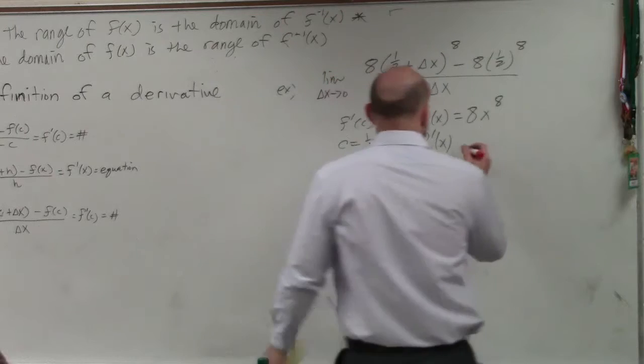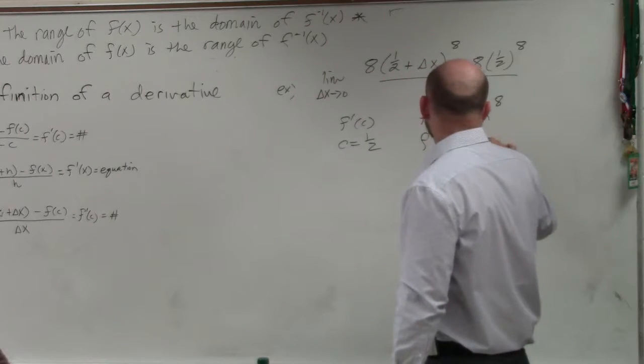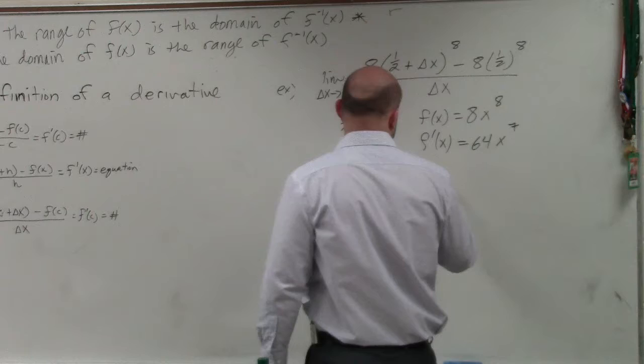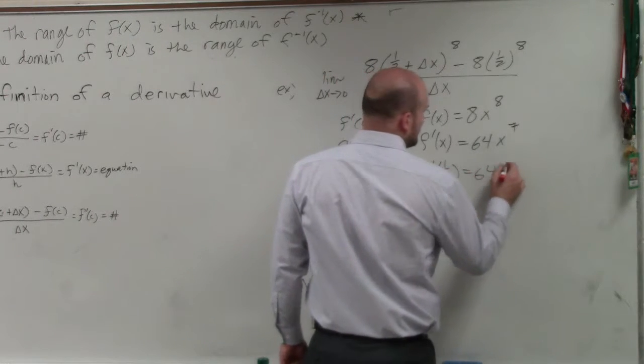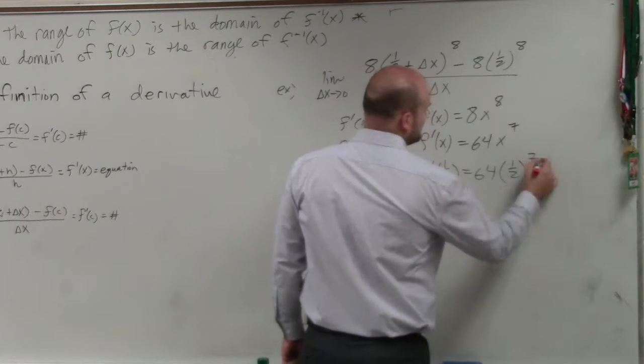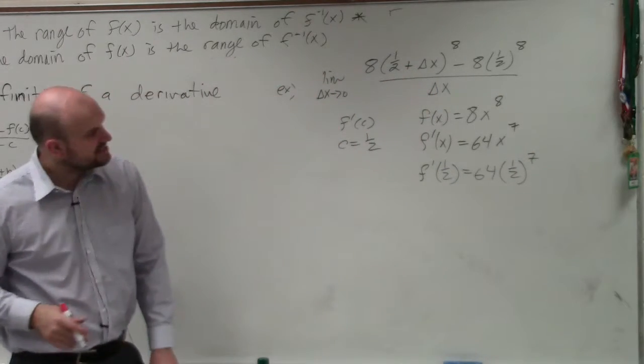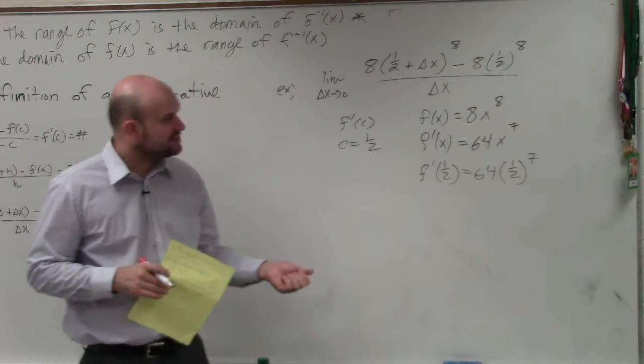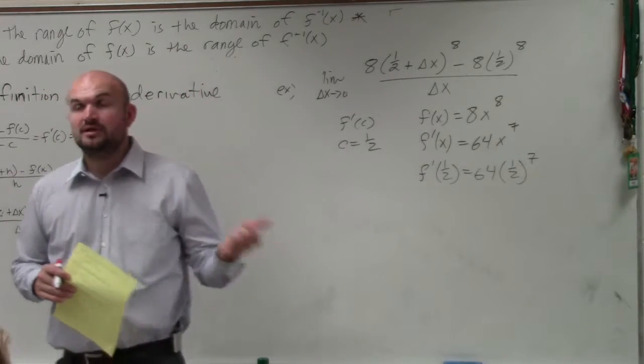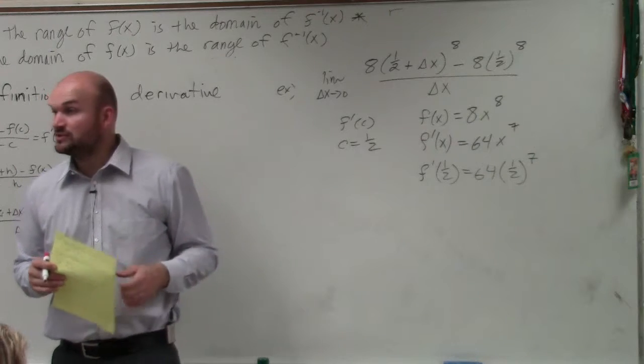So to find the derivative, just using the power rule, I have 64x to the 7th. And then if I do f prime of 1 half equals 64 times 1 half raised to the 7th. 2 to the 5th power is 32, to the 6th power would be 64, to the 7th power would be 128.